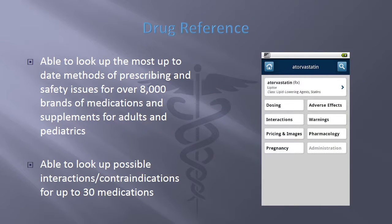Tools included in the Medscape Mobile Application include a Drug Reference Guide, which has the ability to look up the most up-to-date methods of prescribing and safety issues for over 8,000 brands of medications and supplements for both adults and pediatrics. The Drug Reference Guide also has the ability to look up possible drug interactions and contraindications for up to 30 medications at a time.